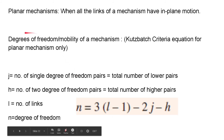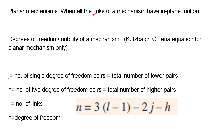For a planar mechanism, all the links have in-plane motion and will not go out of a plane. Earlier we counted degrees of freedom for a link and joint individually; now for a complete mechanism we'll see how to calculate the total number of degrees of freedom, also known as the mobility of the mechanism, using the Kutzbach criteria equation.